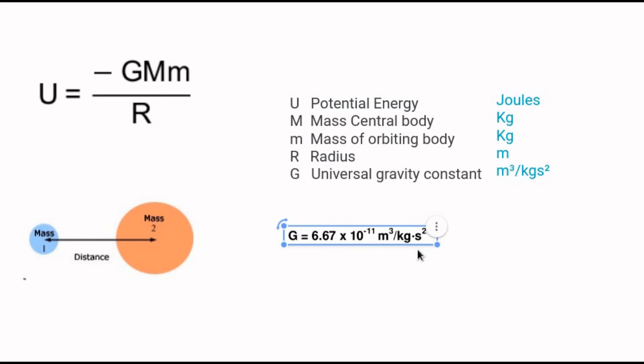U, potential energy, is measured in joules. Masses are measured in kilograms. The radius has to be in meters, so if I give you something in kilometers, be sure you convert them. The universal gravity constant doesn't change because it is a constant.